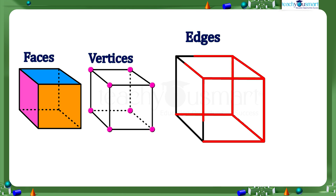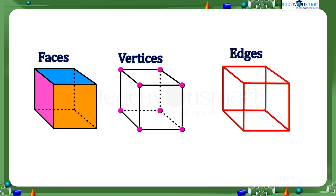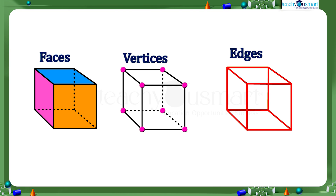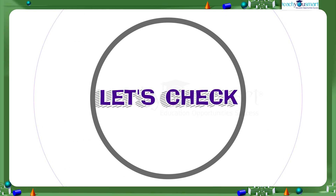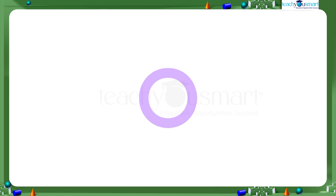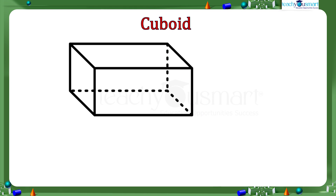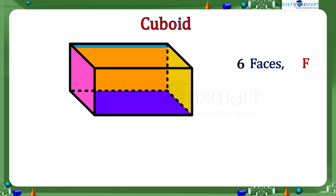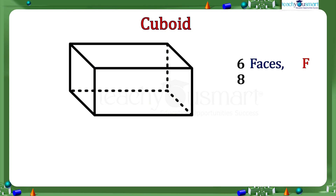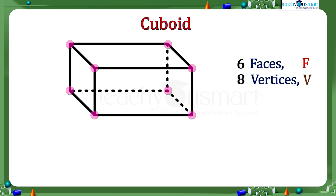We know a convex polyhedron has elements such as faces, vertices, and edges. Is there any relationship between these elements? Let's check. Consider a cuboid. In a cuboid there are six faces, eight vertices, and twelve edges.